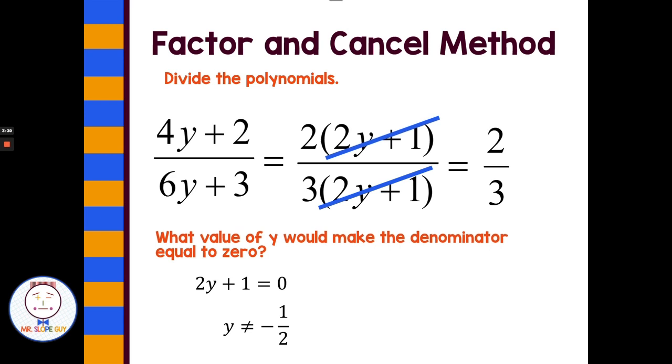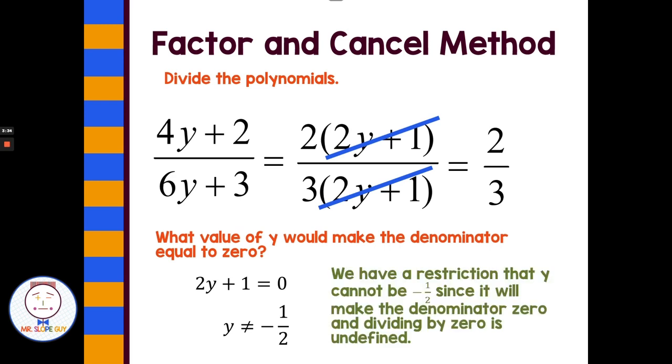And I come up with the idea that y should not equal negative 1 half, because if y were equal to negative 1 half, it would make the whole problem divided by 0 and therefore undefined. So we have what's called a restriction, that y cannot be negative 1 half, so it won't make the denominator 0, and divided by 0 is undefined.